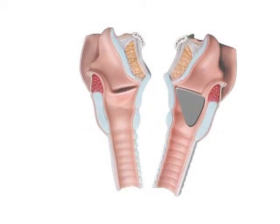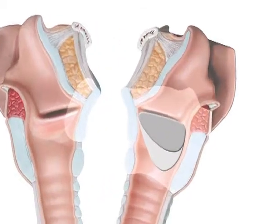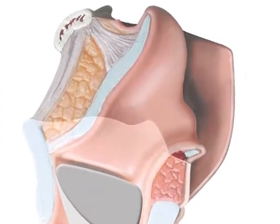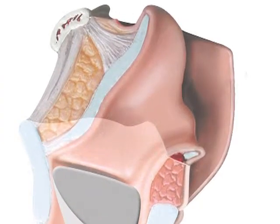Tumor resection includes one hemilarynx with inclusion of the vocal fold. During hemilaryngectomy, the aryepiglottic fold can be preserved without influence on the extent of the tumor resection. Preservation of the aryepiglottic fold will improve the sphincteric and respiratory function after larynx reconstruction.